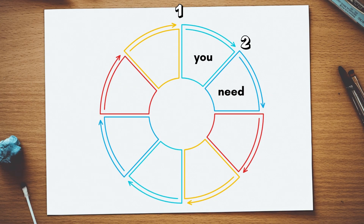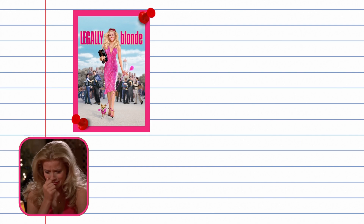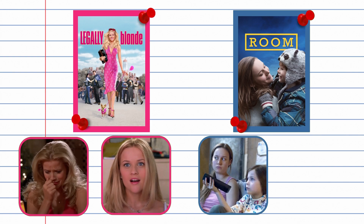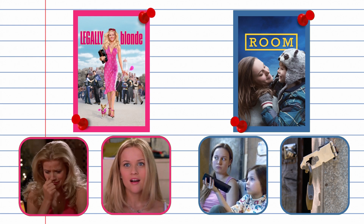From here we move to 'Need.' We see the story take shape as a need is introduced — a problem, a question, or an opportunity arises, introducing the goal the main character will pursue. After Elle Woods gets dumped for not being serious enough, she wants to prove to her ex that she's the perfect girl for him. Ma realizes her son is getting older and more curious, while the man who kidnapped her is becoming more dangerous. Her goal is to escape before it's too late.